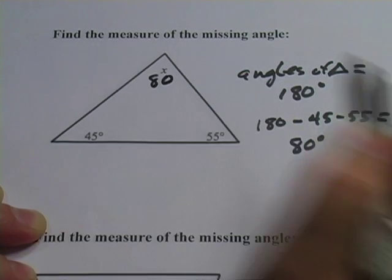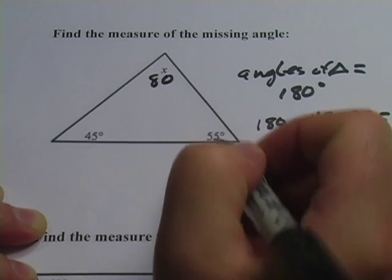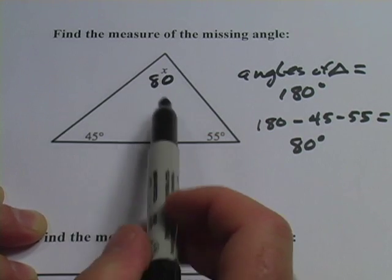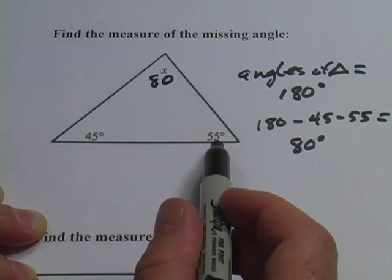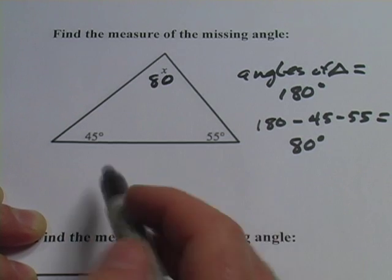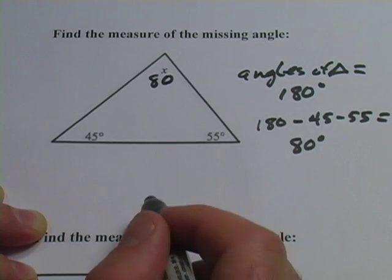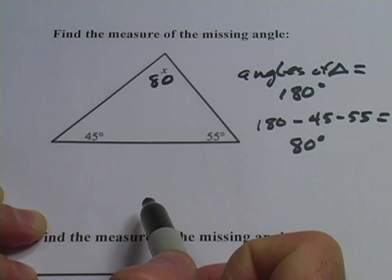So that x would be 80. And you can always check this by adding them together, putting your calculator 80 plus 45 plus 55. You should get 180 because the degrees of any triangle, the degrees of the three angles, are going to add up to 180.